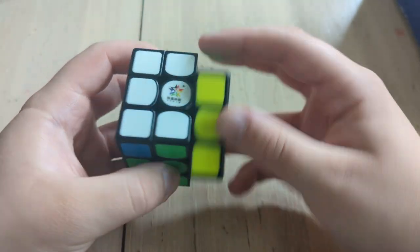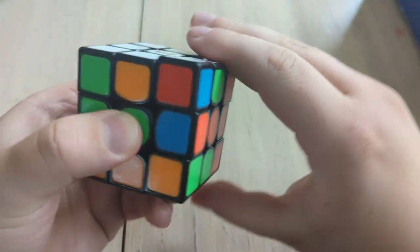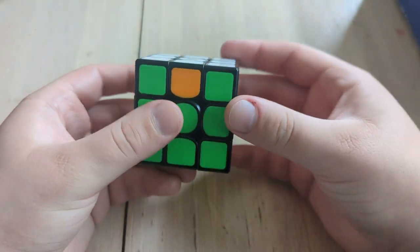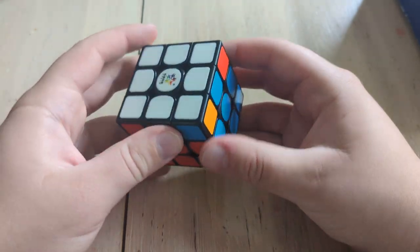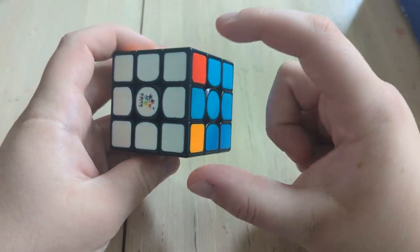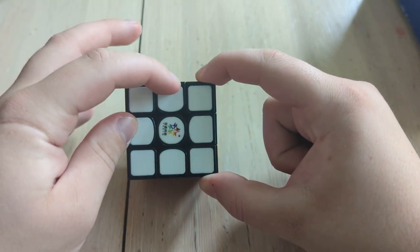So you can switch two corners and two edges like this. And that's a cuboid valid algorithm. It actually works, it's fine. Now we have to switch these two and those two, which is I believe a J-perm.